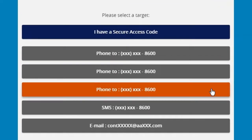If you choose the phone option, you will receive an automated phone call with your secure access code. If you choose the SMS option, you will receive a text message with your secure access code sent to your mobile device. Make sure to open the text message to receive the access code. Your access code is not the number the message was sent from, but your code will be located inside of the text message.